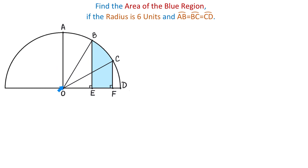Assuming that AO is perpendicular to OD, then 90 degrees divided by 3 is 30 degrees. Now in this figure I will shade 2 more regions. To find the area of the blue region, I will first find the area of the entire shaded region consisting of the triangle OFC and the sector COB, then subtract the area of the triangle OEB, which will leave the area of the blue region.